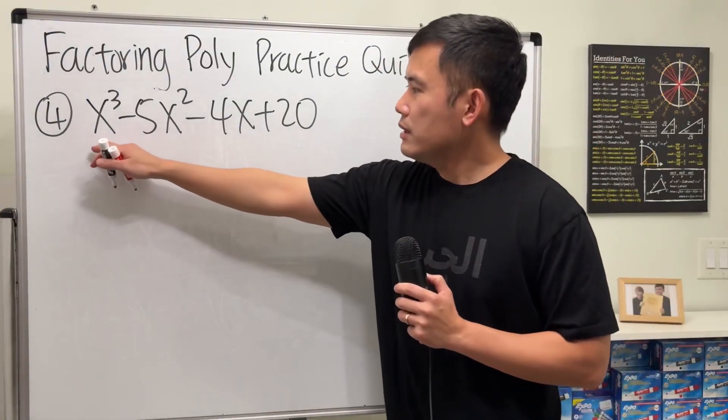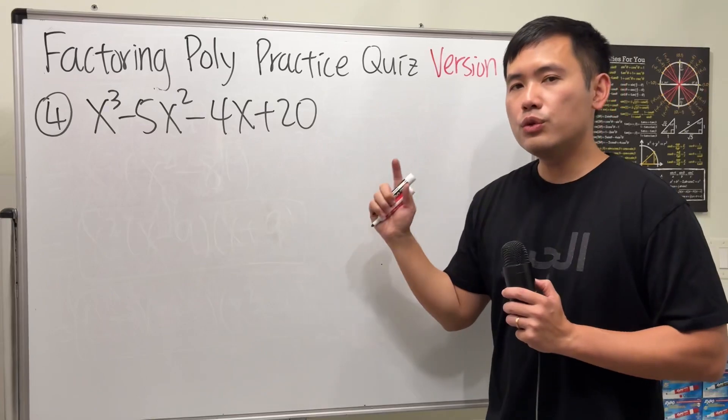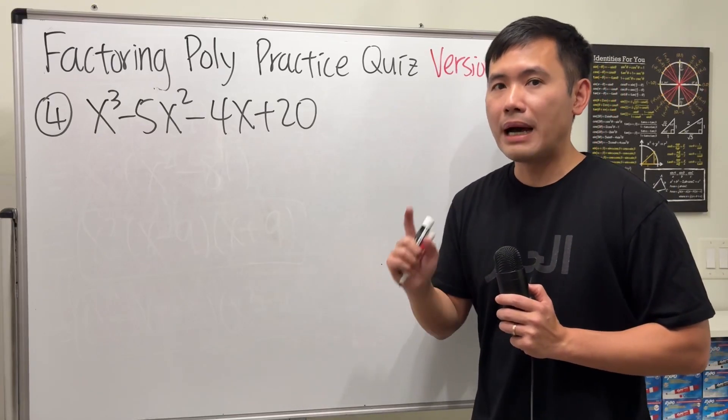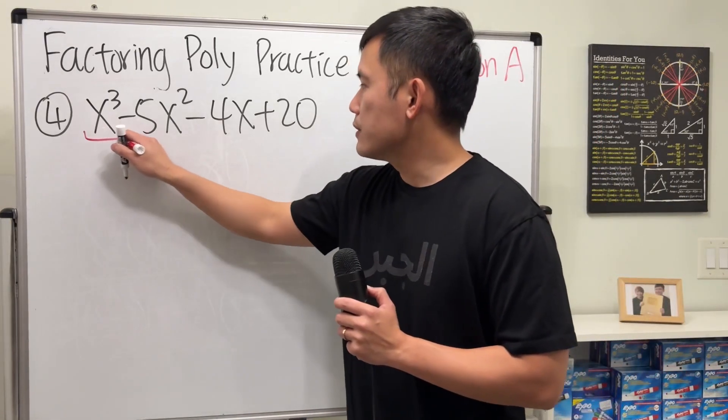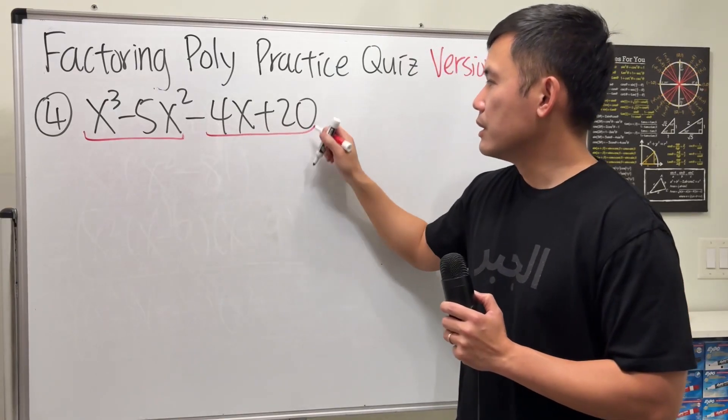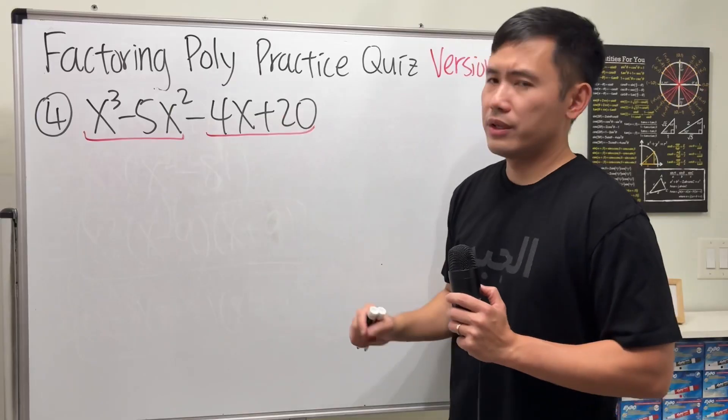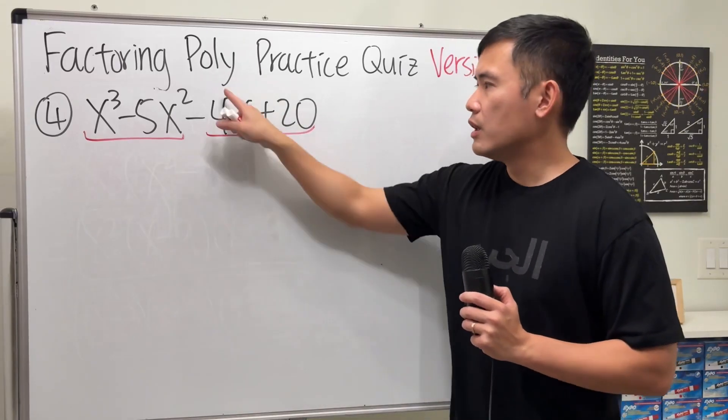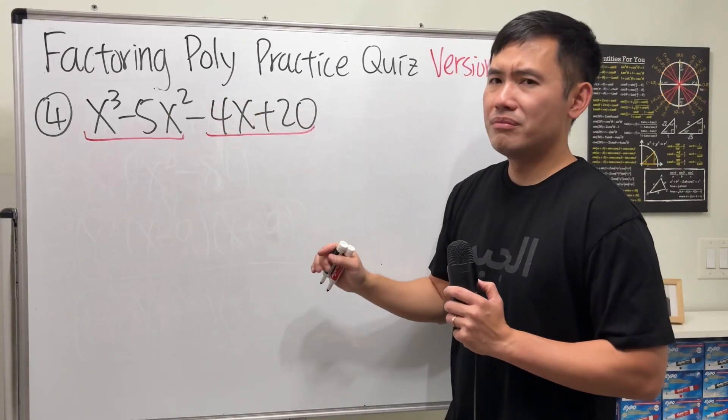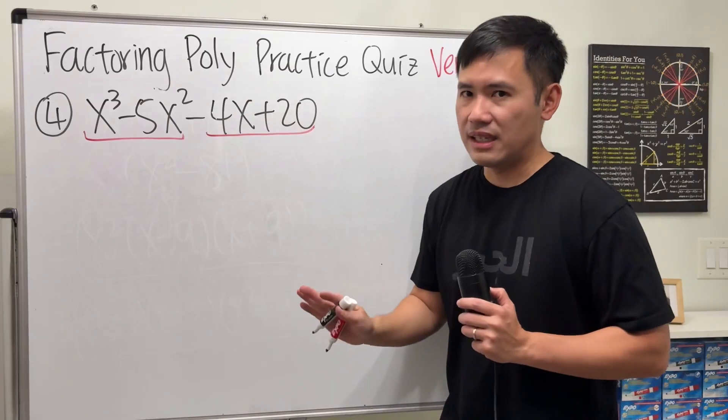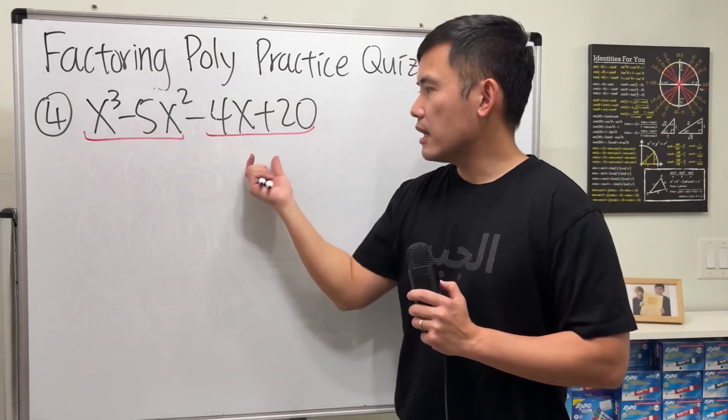Number 4, notice we have four terms. So to factor this, we are going to do it by grouping. The first two, and then the last two. And make sure you draw all the lines, do not put on parentheses right here. It changes everything if you just add a parentheses here, because you have to distribute the negative. That's not correct. So on the lines, on the lines.